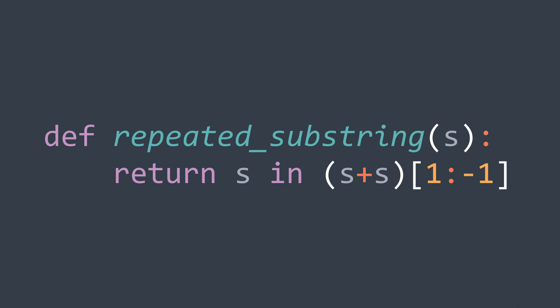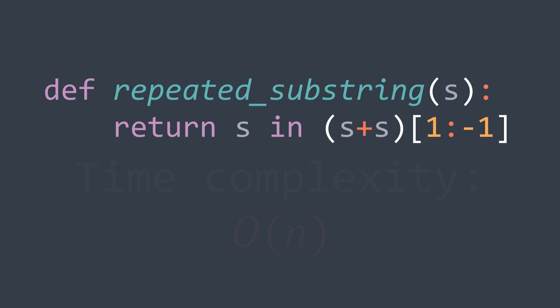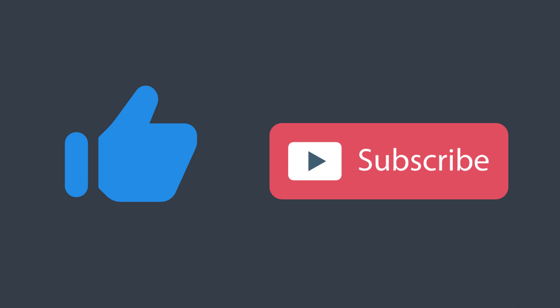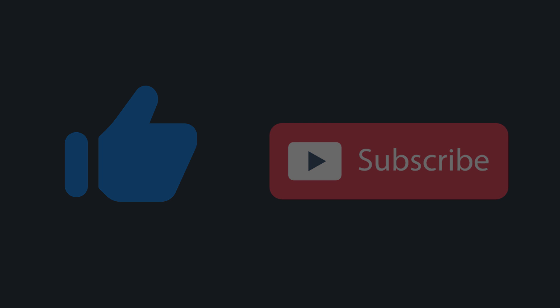In code, we just return whether s is found in s+s with the first and last character removed. Using an efficient string search algorithm, this gives O(n) time complexity. I hope you enjoyed this video — like and subscribe to the channel and see you in the next one.